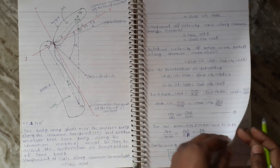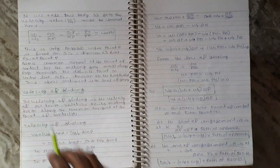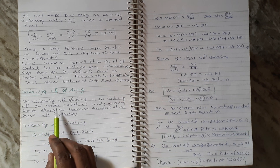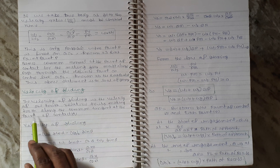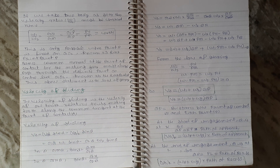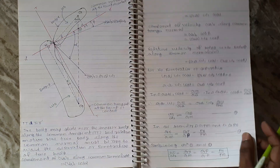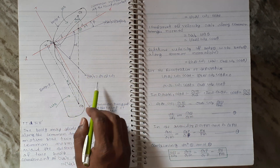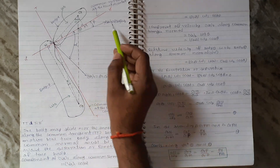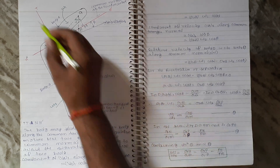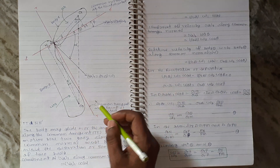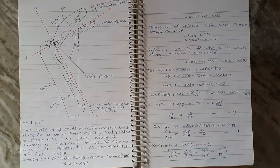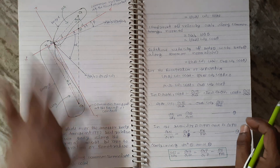The velocity of sliding is the relative velocity of body 1 with respect to body 2 along the common tangent at the point of contact — in other words, the velocity of one tooth relative to its mating tooth along the common tangent at point Q. To calculate it, we find the component of vQ1 along the common tangent, the component of vQ2 along the common tangent, and take their difference.